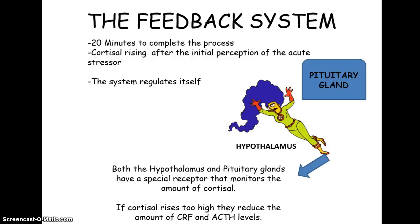There's also a feedback system — the body does regulate itself. If cortisol rises too high in our system, our body naturally reduces the amount of ACTH and CRF. So that is the first part — those are the two systems we just looked at. Make sure you go back, look at it again, and make sure you fully understand. I'll see you in the next section.